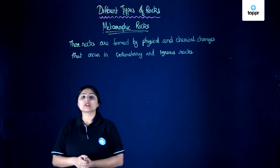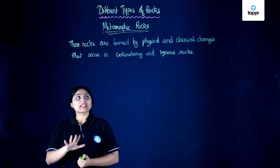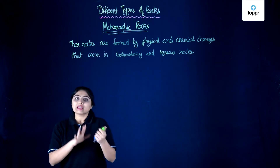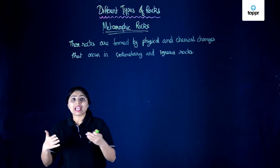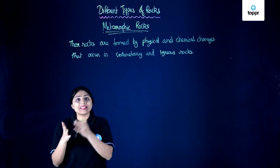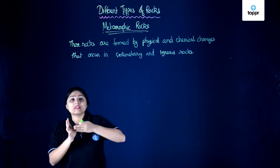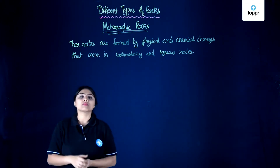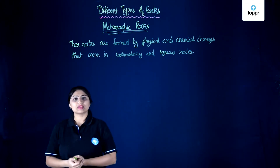There are many metamorphic rocks around us because there are many sedimentary and igneous rocks around us. When different types of rocks transform, they form different types of metamorphic rocks.